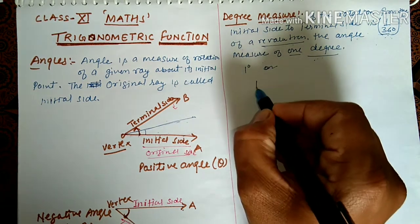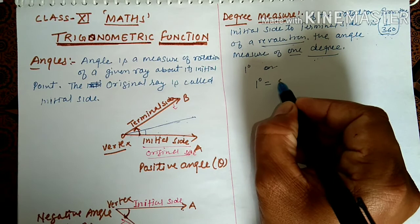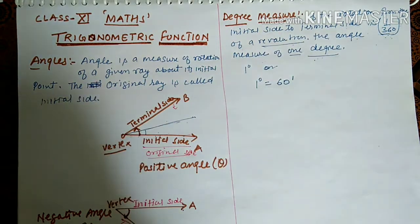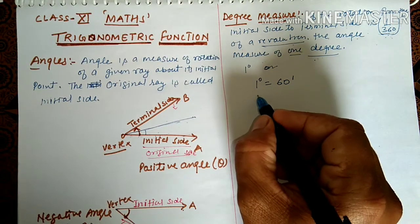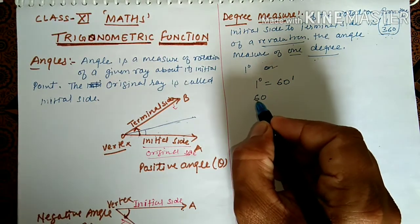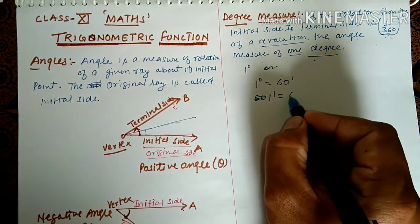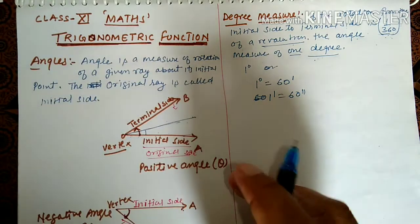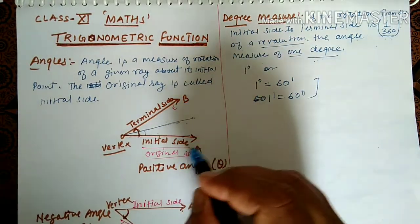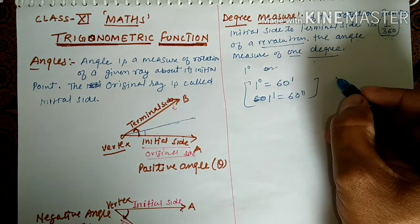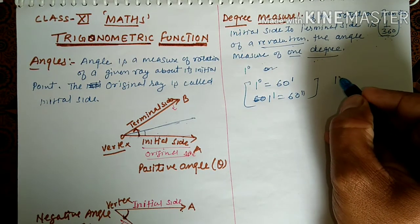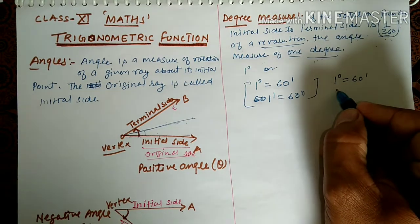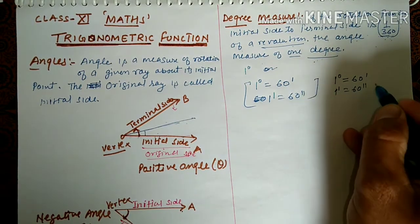One important thing: 1 degree contains 60 minutes. Minutes is denoted by a single dash. And 1 minute contains 60 seconds.